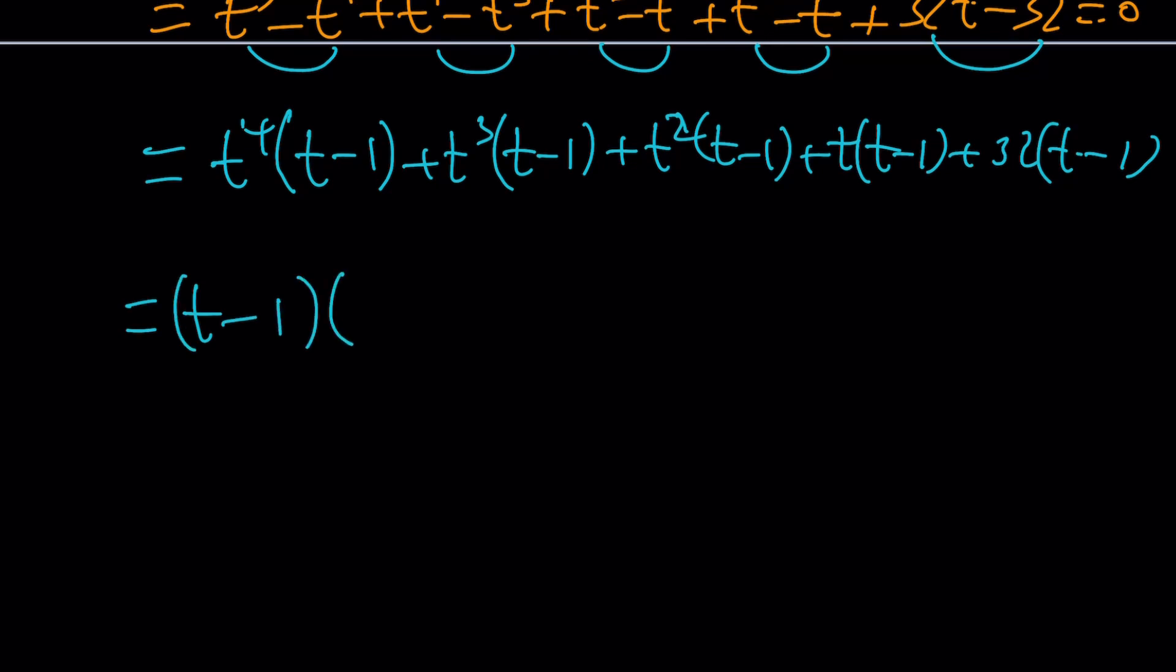And the other factor is going to be a good one. T to the 4th plus T cubed plus T squared plus T plus 32. And the whole thing is equal to 0. Awesome.